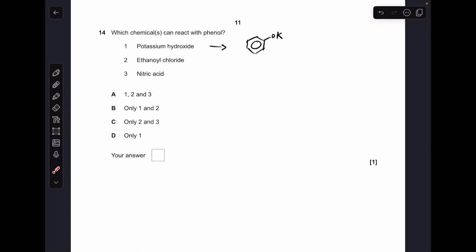Question fourteen, potassium hydroxide does react with phenol, it produces that, so statement one's okay. See what I did there, phenol can also react with acyl chloride, so it would generate that product there. That one's okay. Phenol would also react with nitric acid and you'd get something like that. All three were correct, so A is the answer.